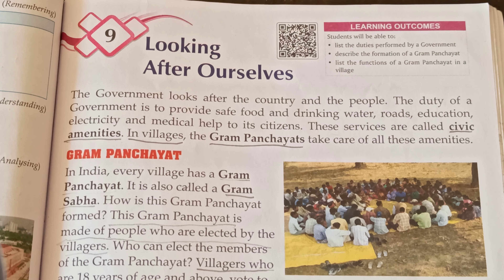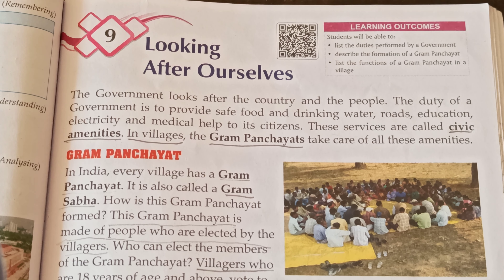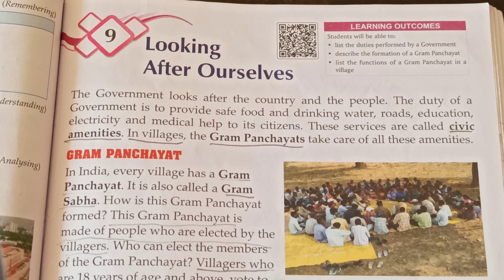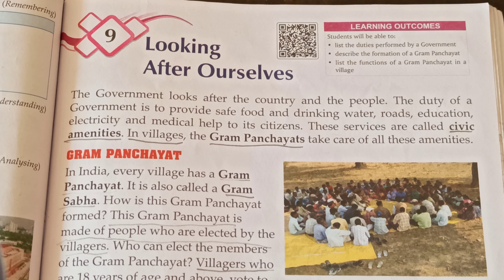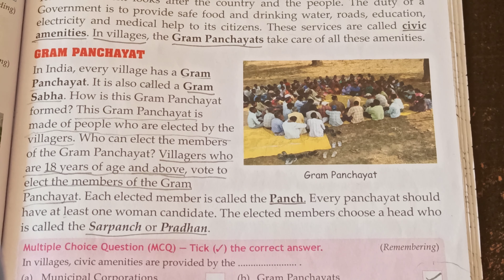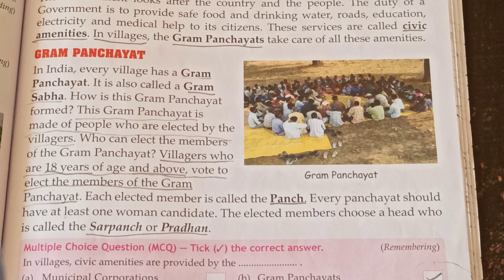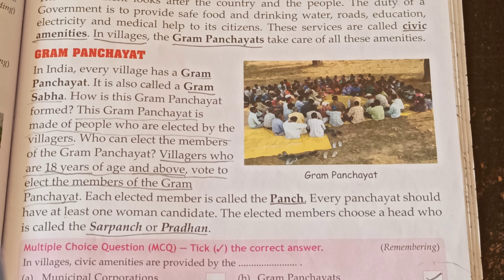In India, every village has a gram panchayat. It is also called a gram sabha. This gram panchayat is made of people who are elected by the villagers. Villagers who are 18 years of age and above have the right to vote and elect the members. Each elected member is called a panch. Every panchayat should have at least one woman candidate. The elected members choose a head who is called the sarpanch or pradhan.